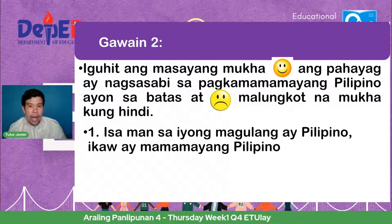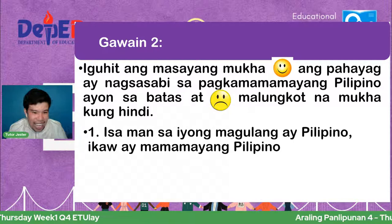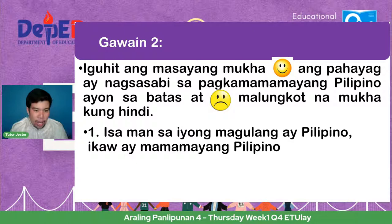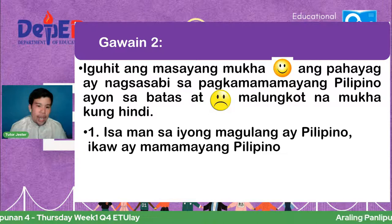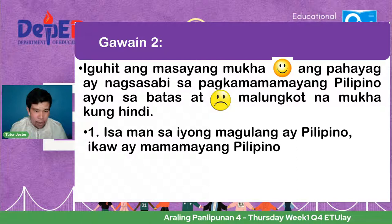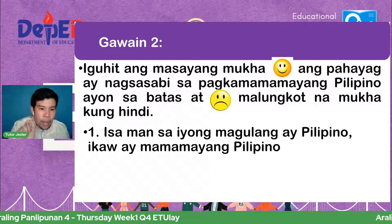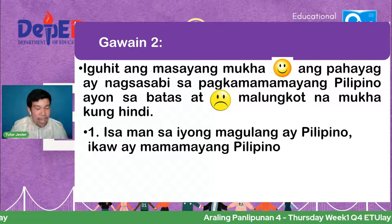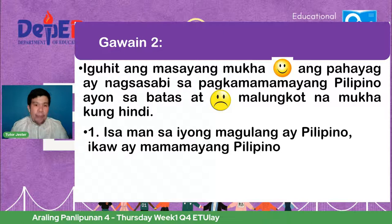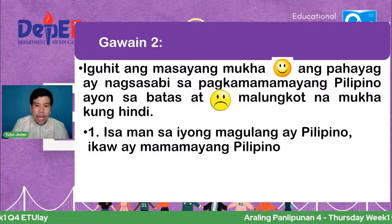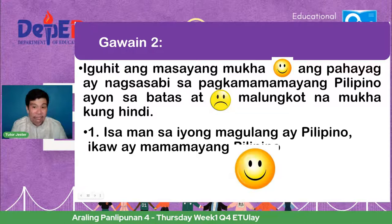Ang kasagutan sa number one ay happy face — kapag isa man sa ating magulang ay Pilipino, matatawag tayo na mamamayang Pilipino. Number two: si Julius ay anak ng isang Igorot at isang Ilokano, naninirahan sila sa Maynila — siya ay Pilipino. Happy or sad face? Ang kasagutan ay happy face din.